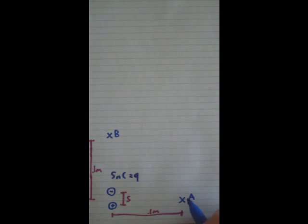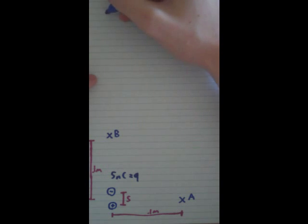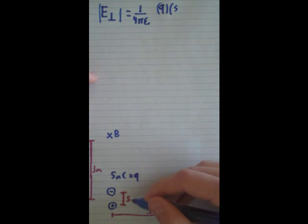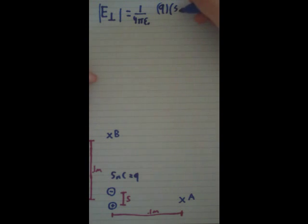I guess let's do A first. First let's write down the formula for the E field perpendicular to a dipole. Equals 1 over 4π epsilon naught times Q, which is charge, times S, which is the distance between the two particles in the dipole, over R cubed, which is the distance.